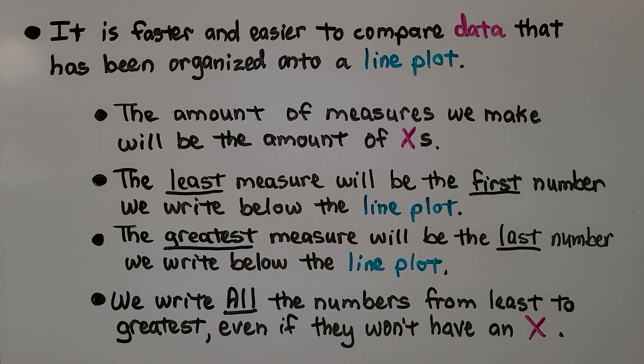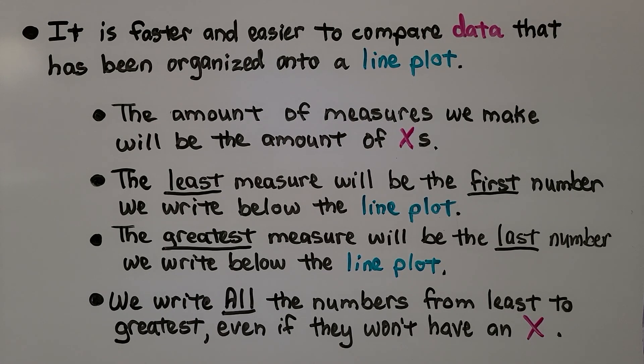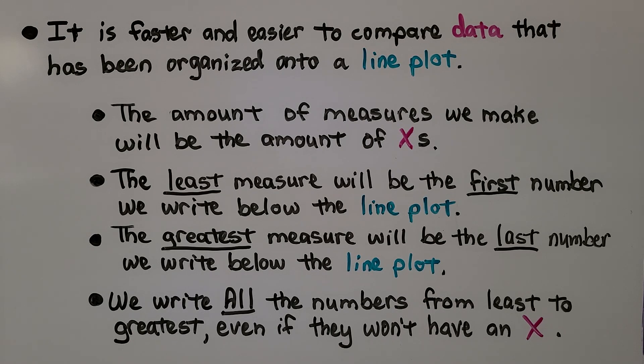It's faster and easier to compare data that has been organized onto a line plot. The amount of measures we make will be the amount of x's. The least measure will be the first number we write below the line plot. The greatest measure will be the last number we write below the line plot. And we write all the numbers from least to greatest, even if they won't have an x.